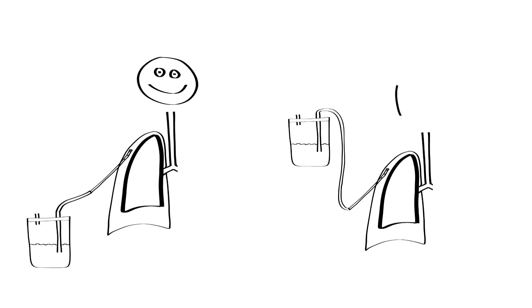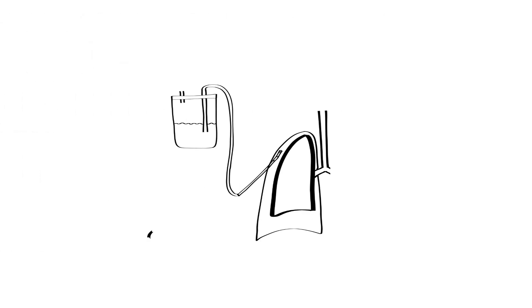A major benefit of an underwater seal is that there is visual confirmation when there is air leaving the pleural space in the form of bubbles. Underwater seal drains need to stay below the level of the patient's chest to make sure fluid doesn't get sucked back into the pleural space. For this reason, they may be clamped temporarily if they need to be elevated during patient repositioning.